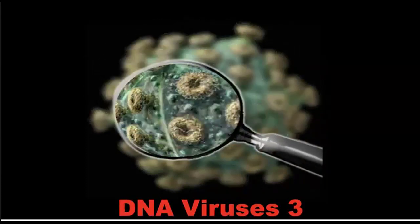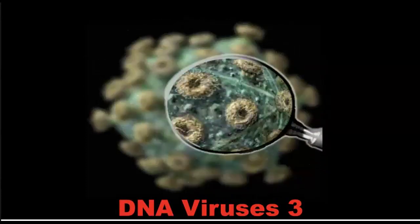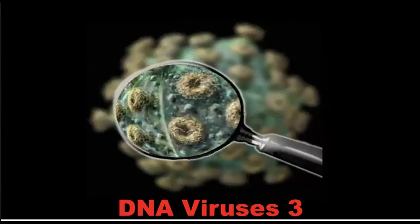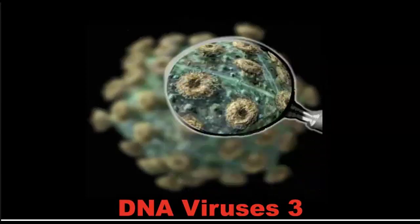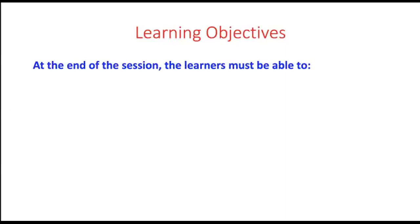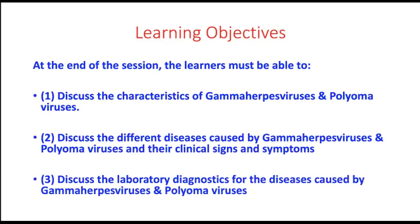This is the last part of the three-part series and discussions on DNA viruses. The learning objectives for this topic: at the end of the session, learners are expected to discuss the characteristics of gamma herpes viruses and polyomaviruses, discuss the different diseases those two groups of viruses cause and their clinical signs and symptoms, and enumerate the methods we can perform in the laboratory to identify gamma herpes viruses and polyomaviruses.